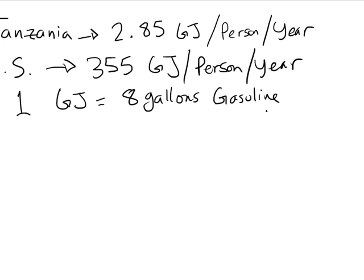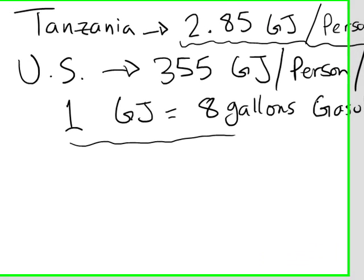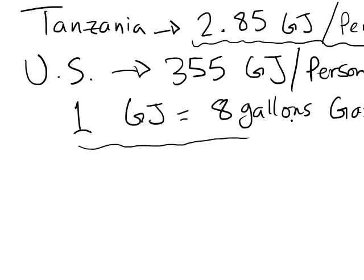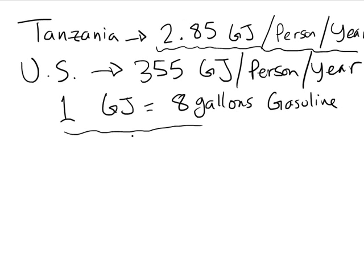Also given was that 1 gigajoule required 8 gallons of gasoline. And that was the converter that I wanted you to use. So it asks us first how much gasoline does a person from each country use per year. So this one is how many gigajoules per year a person.